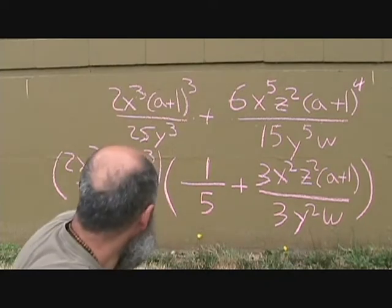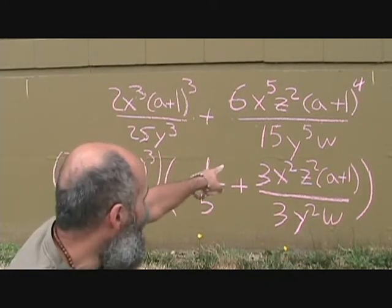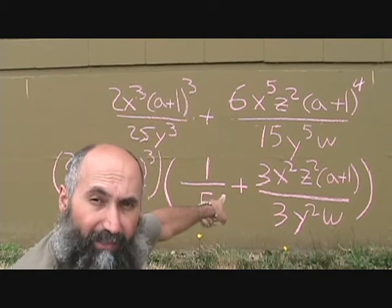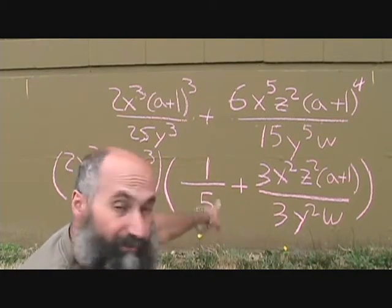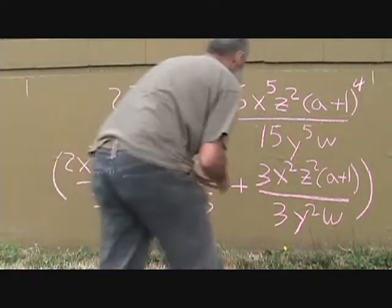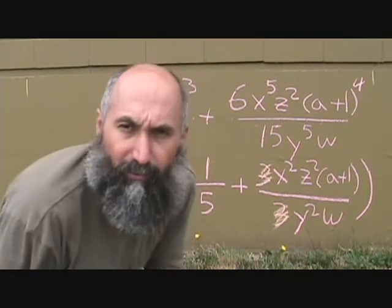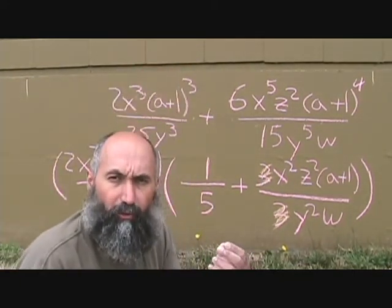Now, this bottom part is that top guy factored. And we could have simplified this a little bit further because we've got 3 over 3 here, so the 3s can cancel. Always try to simplify your equations.